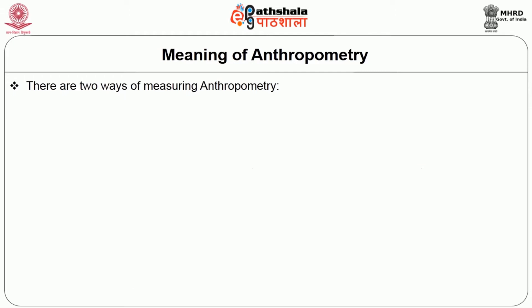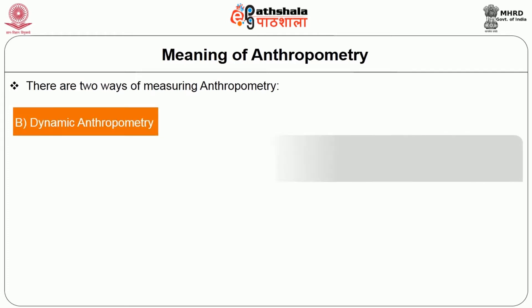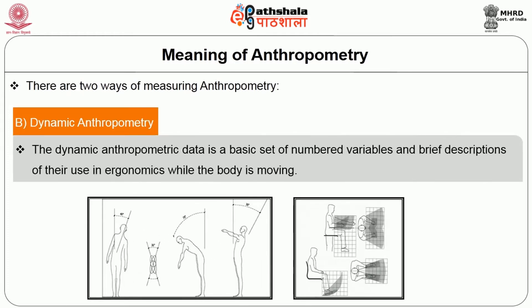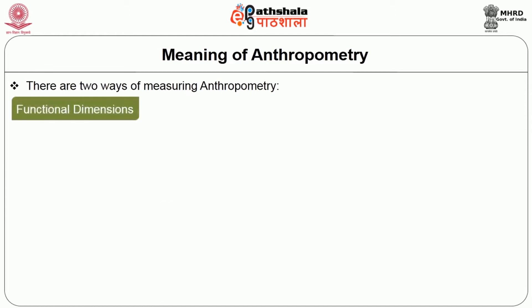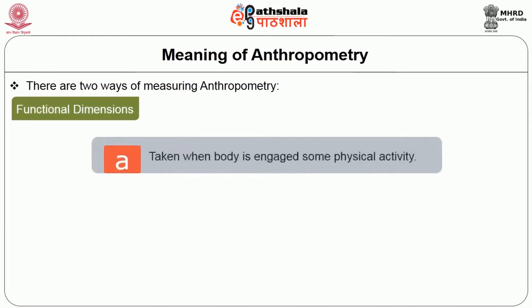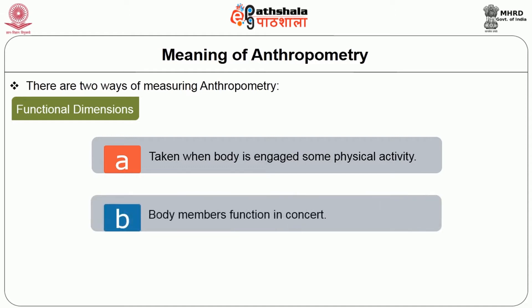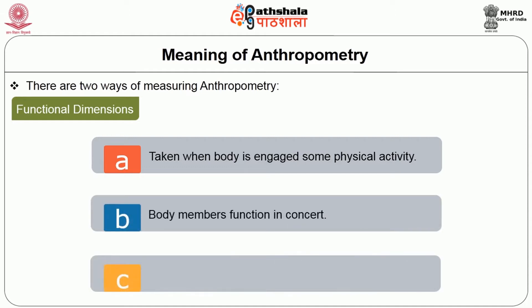Dynamic anthropometry data is a basic set of numbered variables and brief descriptions of their use in ergonomics while the body is moving or in a position. Functional dimensions are taken when the body is engaged in some physical activity — body members function in concert. There is no systematic procedure for translating static measurements into dynamic measurements.